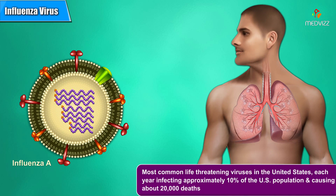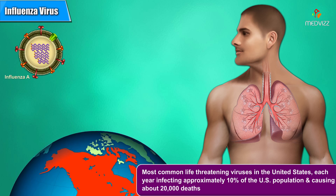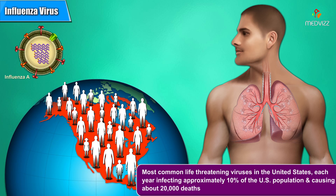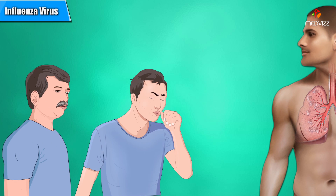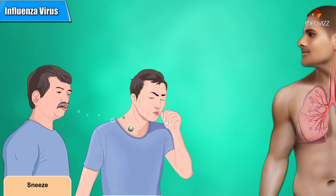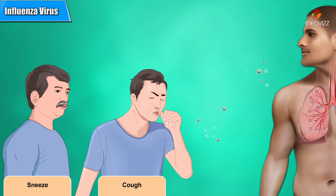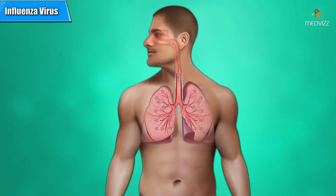Influenza A is one of the most common life-threatening viruses in the United States, each year infecting approximately 10% of the U.S. population and causing about 20,000 deaths. Influenza is normally transmitted by droplets or aerosols from the sneeze or cough of a nearby infected person. When another individual inhales the droplets, the virus has a chance to invade the cells of a new host.